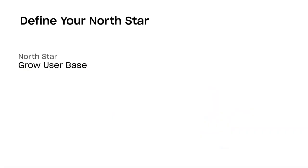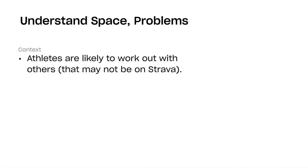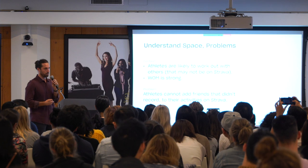Our North Star was growing the user base — an acquisition project. Our KPI was signups: new members joining Strava. The lever we chose was real-life interactions linked to Strava — perhaps I'm a Strava athlete who goes on a run with friends not on Strava, and we leverage that real-world connection. Context: we knew athletes are very likely to work out with others not on Strava, and word of mouth drives a lot of traffic. The problem was athletes couldn't add friends who didn't record to their Strava activities, confirmed through qualitative research and customer support outreach.